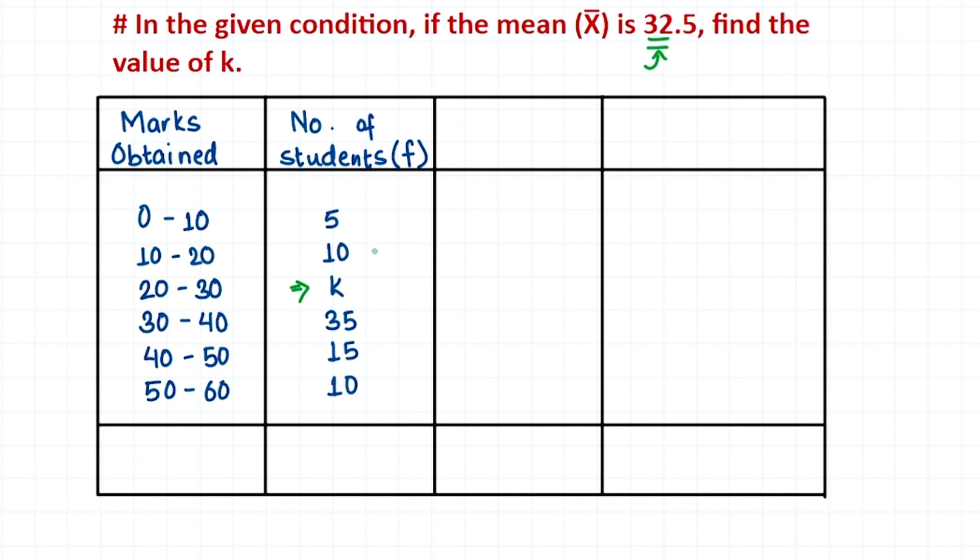First, to find the mean of this data, we need the mid value, which we'll represent with m. This mid value is also known as the class mark, and they both mean the same thing. It's the mid value of these classes.